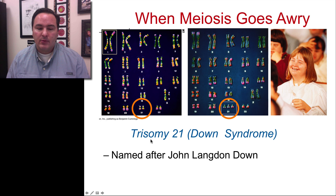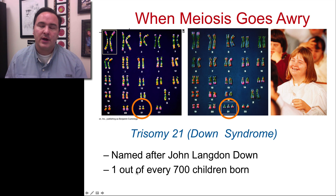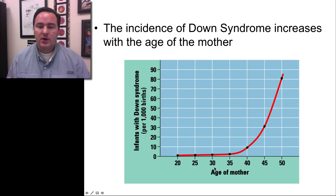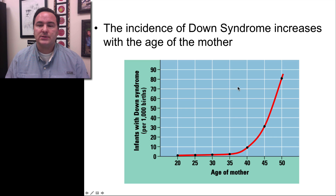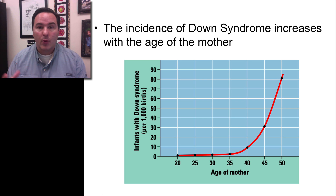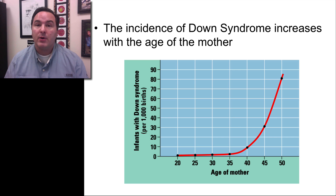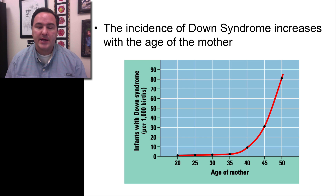Down syndrome was named after John Langdon Down, and it occurs in about one out of every 700 children born in the U.S. We also know that the age of the mother has to do with this — the incidence of Down syndrome increases with the age of the mother. This is one of the reasons why doctors tell women who start to turn 40 or 45 to be aware that their chances of having a child with Down syndrome have increased because of their age.